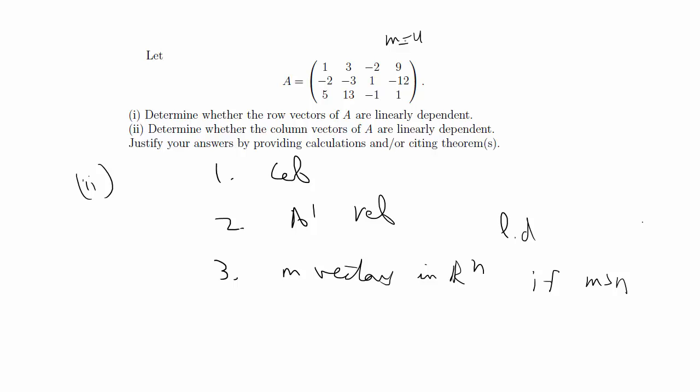And the number of rows you have is equal to 3. So 4 is greater than 3, and that holds true, so you know you have to have linear dependence. Knowing this theorem can save you time on this problem because you wouldn't have to transpose and you wouldn't have to do row echelon form again.